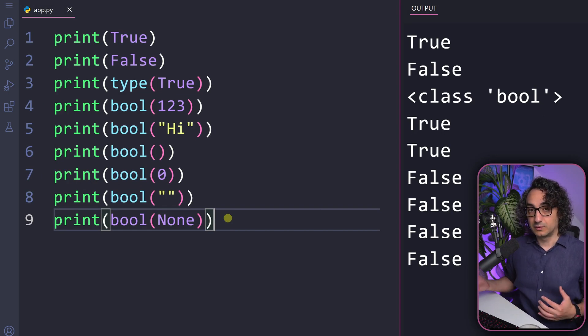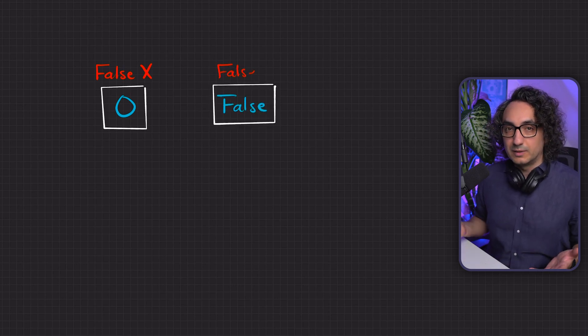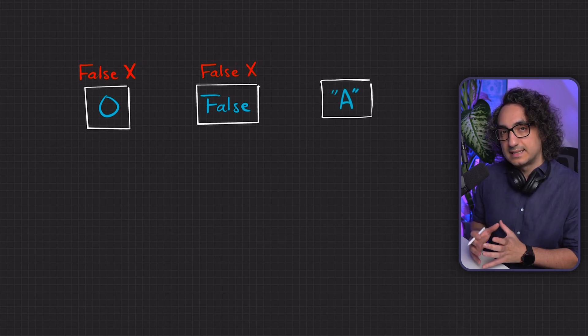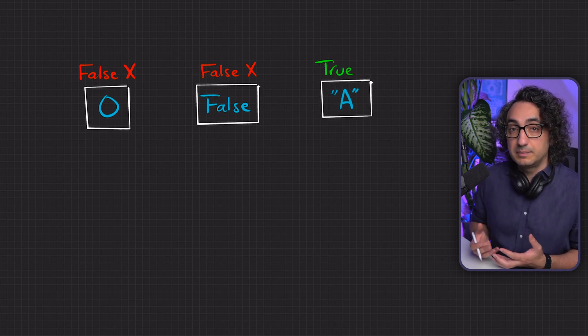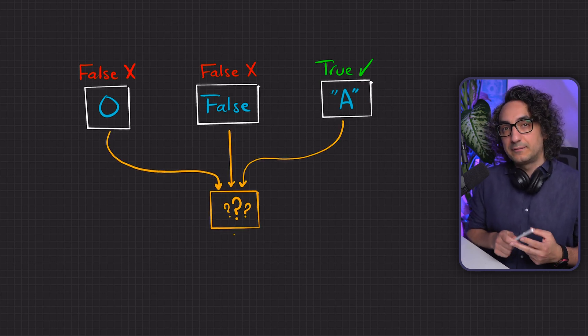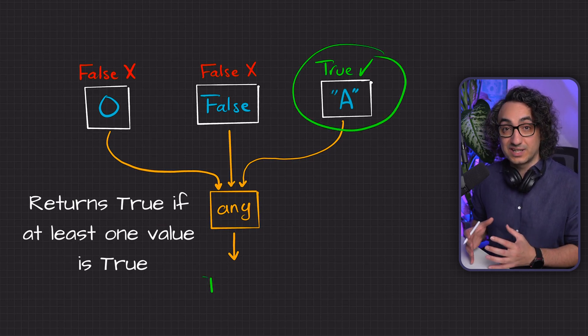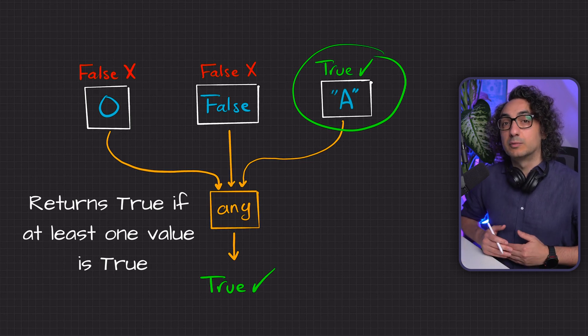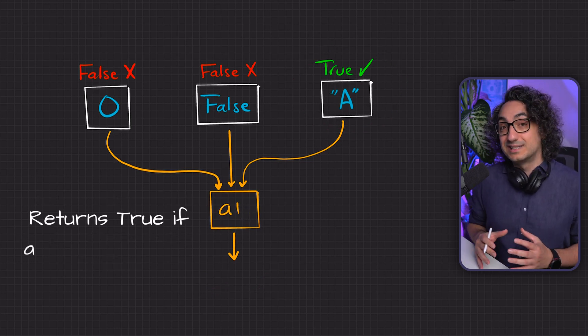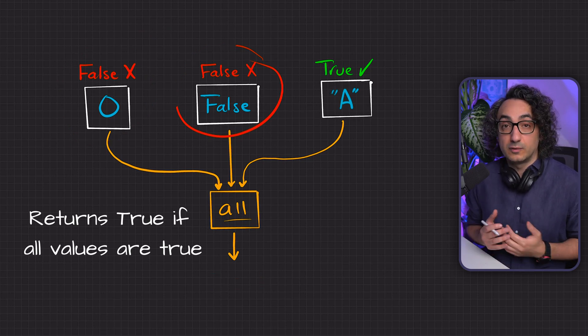We have two important built-in functions called all() and any(). For example, consider three values: zero (which is false in boolean), false (also false), and the string character 'a' (which is true because it's not empty). The any() function is happy if just one of those values is true — so if there is one 'yes', you get true. But all() is greedy — it requires everything to be true, so if there is even one false, you get false.